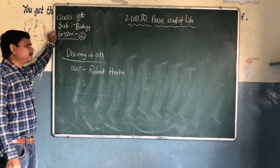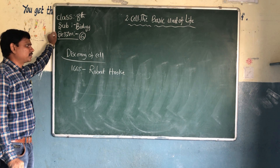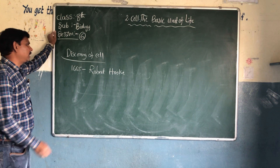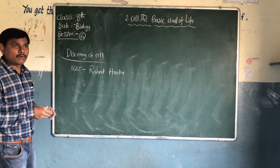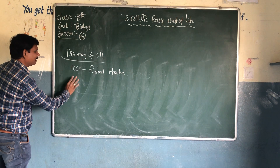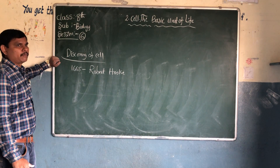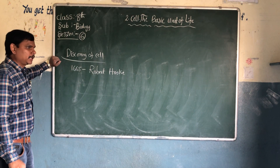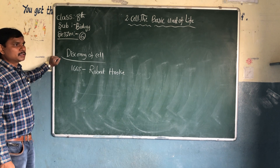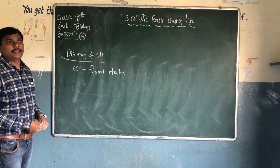In 1665, Robert Hooke discovered the cell. How did he discover the cell? There is a small story of how Robert Hooke discovered the cell. He observed the cell in an oak tree — he observed the cell in slices of the cork of an oak tree.